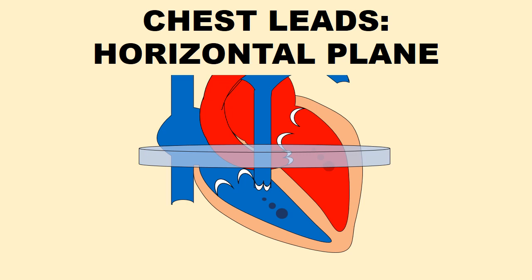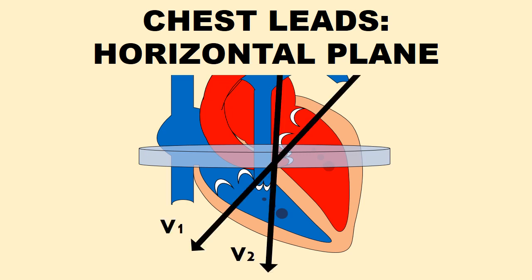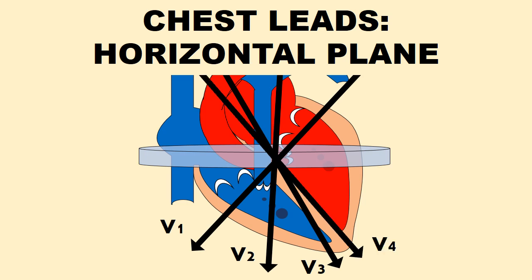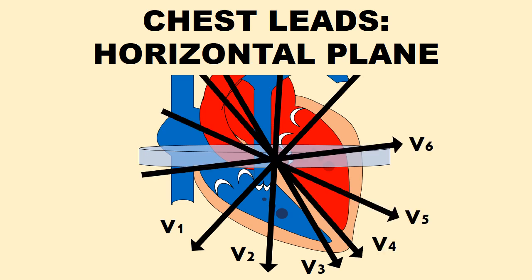Leads V1 and V2 look at the anterior wall of the heart, Lead V3 looks at the interventricular septum, Lead V4 looks at the apex, and Leads V5 and V6 look at the lateral wall of the left ventricle.